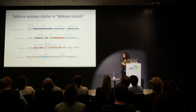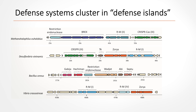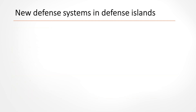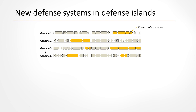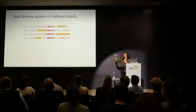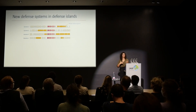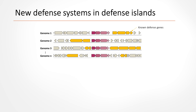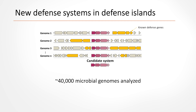We hypothesized in the lab that unknown operons around these defense systems are also defense systems themselves, and previous work confirmed this. So my goal was to systematically search for new defense systems using this idea of defense islands. I created a pipeline that looks for conserved operons found in different bacteria and different genomes, located next to different defense systems — these operons would be candidate defense systems.